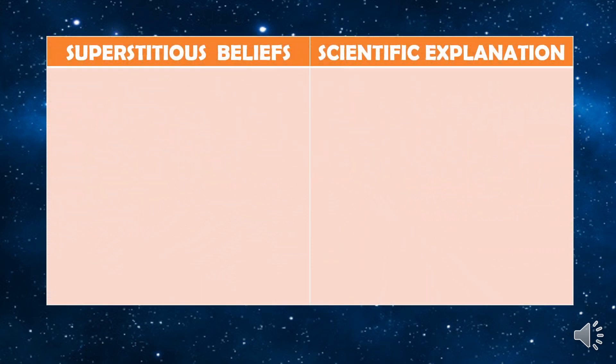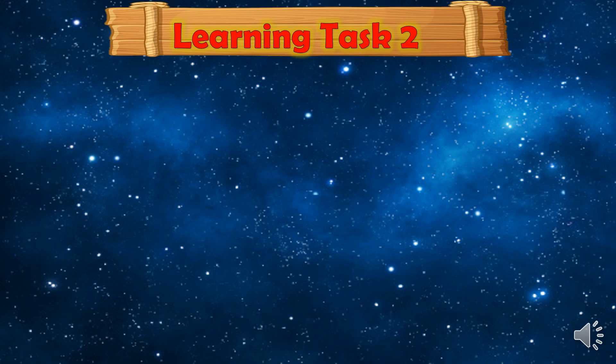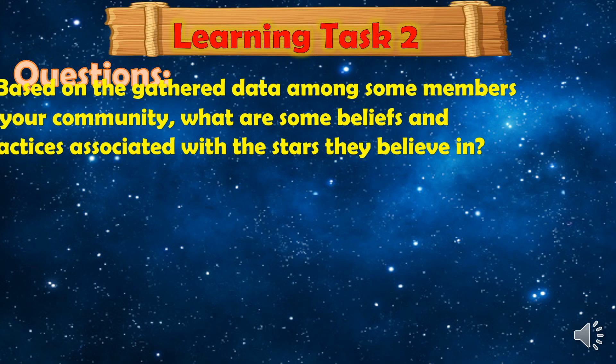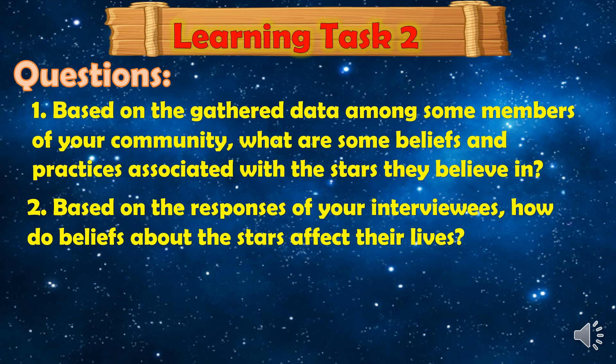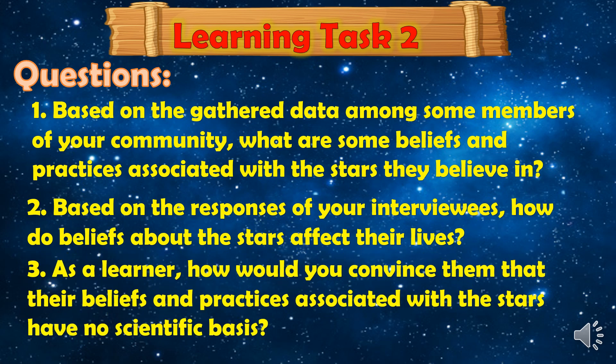Here is the table you will use in answering Learning Task 2. The first column is superstitious beliefs, and the second column is scientific explanation. Questions for Learning Task 2: First, based on the gathered data from members of your community, what are some beliefs and practices associated with the stars that they believe in? Second, based on the responses of your interviewees, how do beliefs about the stars affect their lives? Third, as a learner, how would you convince them that their beliefs and practices associated with the stars have no scientific basis?